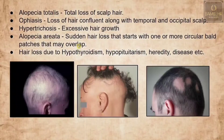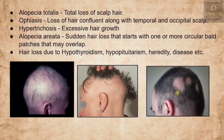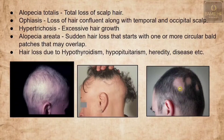Modern correlations for hair conditions include: alopecia totalis (total loss of scalp hair); opiasis (loss of hair along temporal and occipital scalp); hypertrichosis (excessive hair growth); and alopecia areata — sudden loss of hair starting with one or more circular or oval-shaped patches in particular areas. Hair loss can also be caused by hypothyroidism, hypopituitarism, hereditary factors and various diseases.